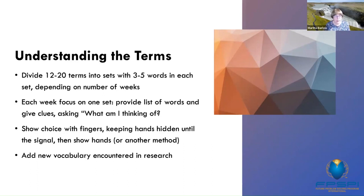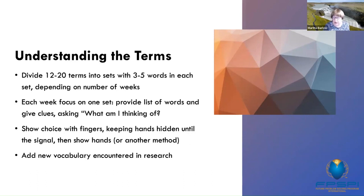One activity is: each week, focusing on one set, provide the list of three to five words and say 'What am I thinking of?' Give a definition and kids show a choice with their fingers — are you thinking of word one, two, three, four, or five? You can also add new vocabulary that you encounter as you read some of the research articles.